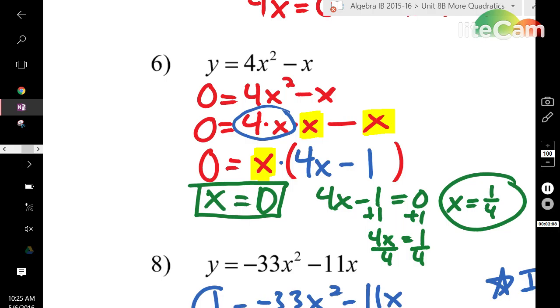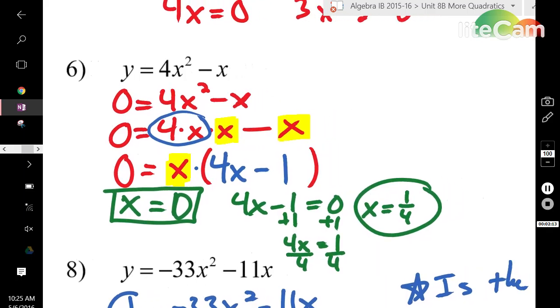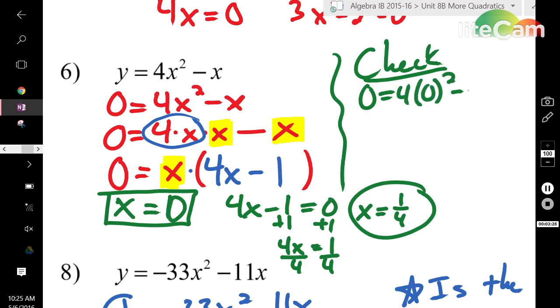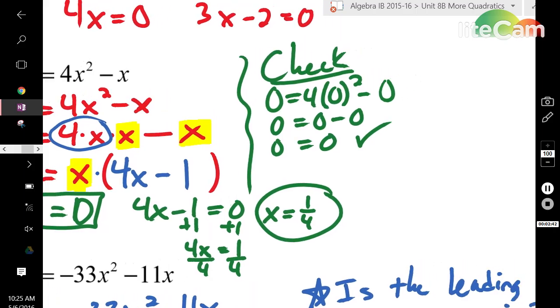If you want to check your answer, simply plug those back into the original function to see if you get a value of zero. For example, if you're doing a check, if you do 0 equals 4 times 0 squared minus 0. So, I've plugged in the first 0 into the equation. 0 squared is 0. 4 times 0 is 0. And 0 minus 0 is 0. Therefore, that one works out.